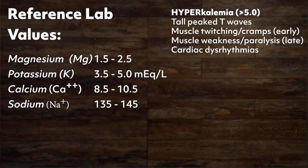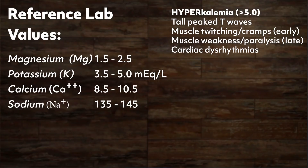Hyperkalemia is when the potassium level is greater than 5.0 milliequivalents per liter and can be life-threatening. With elevated potassium, there is overexcitement of cardiac tissue, and on the ECG you will see tall, peaked T waves. You will also see muscle twitching and cramps early on, then later muscle weakness and paralysis, with possible life-threatening cardiac dysrhythmias. Hyperkalemia is often associated with renal disease, but can also result from salt substitutes and medications such as potassium-sparing diuretics. Treatment involves renal dialysis, potassium-lowering medications, and restricting potassium-containing foods.